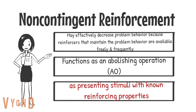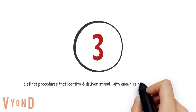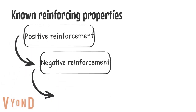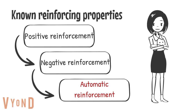NCR is effective in decreasing problem behaviors because the reinforcers that have maintained the problem behavior are available freely and frequently. We want to make sure we know what the function is. It functions as an abolishing operation and is also referred to as presenting stimuli with known reinforcing properties. There are three distinct procedures that identify and deliver stimuli with known reinforcing properties: positive reinforcement, negative reinforcement, and automatic reinforcement.